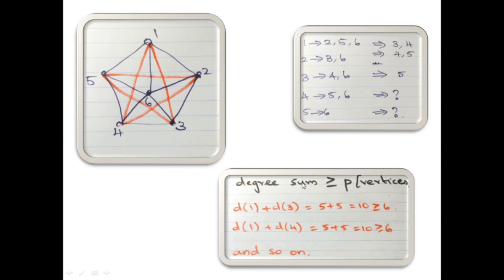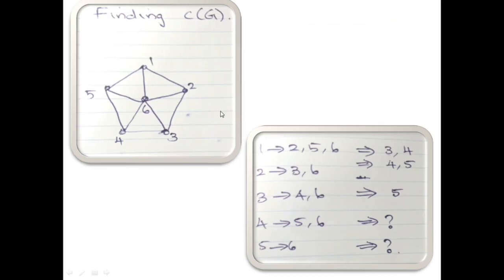The closure condition is that the degree sum will be at least p, that is greater than or equal to p. Here the total number of vertices is six, so p equals six. Now degree of one plus degree of three: degree of one is five, degree of three is five, so that is ten, which is greater than or equal to six. Similarly you check for d(1,4), d(2,4), d(2,5), and d(3,5) — you will get values definitely greater than or equal to six. So this is the closure of this graph.